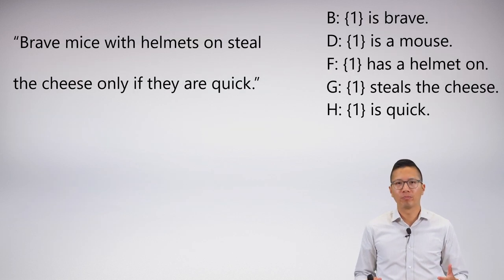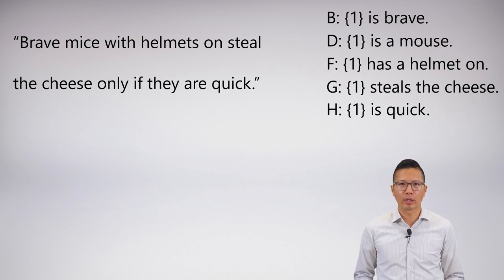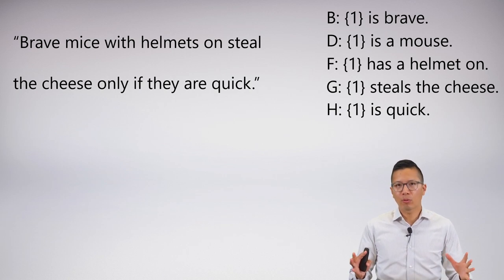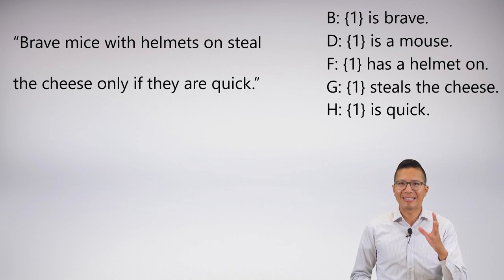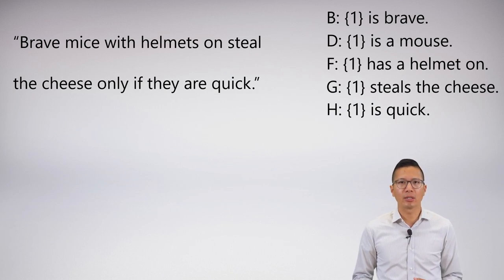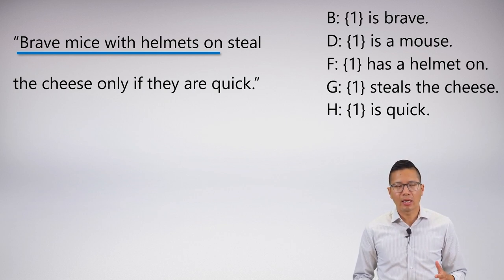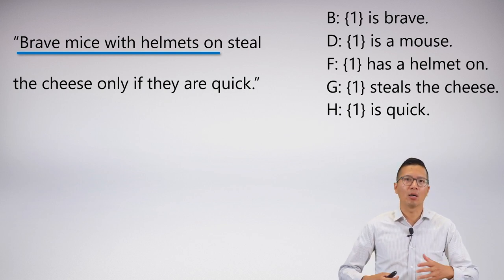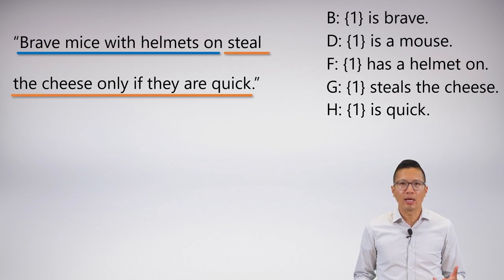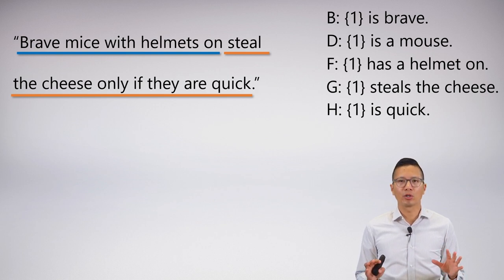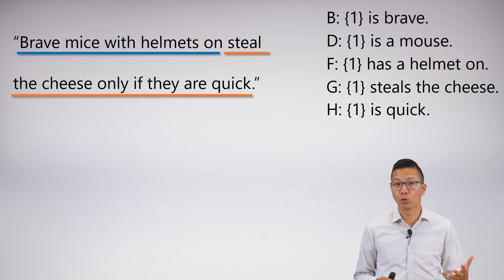Let's symbolize: 'brave mice with helmets on steal the cheese only if they are quick.' When you look at a question like this, one of the first things you want to do is identify what the group or subject of the sentence is. It seems that what we're talking about are brave mice with helmets on. Then, what property are we bestowing on this subject? We're saying that they steal the cheese only if they are quick.